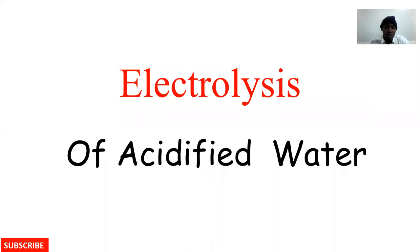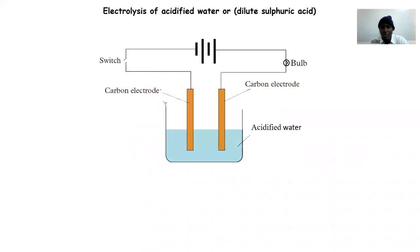In today's video we are going to look at electrolysis of acidified water. We want to see the effect of passing electricity through water that we have acidified. We all know that water is actually a poor conductor of electricity, but once we add some dilute sulfuric acid to it, the ability of this water to conduct electricity is slightly enhanced.